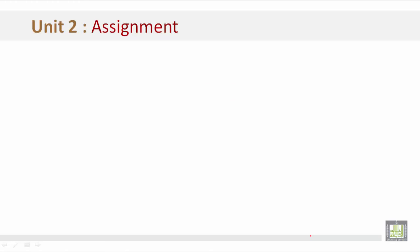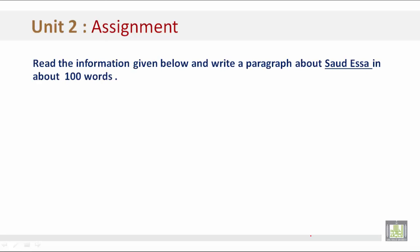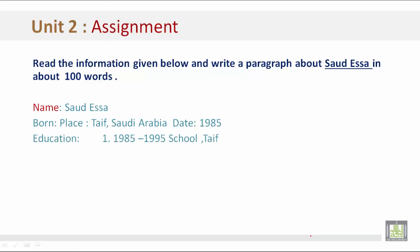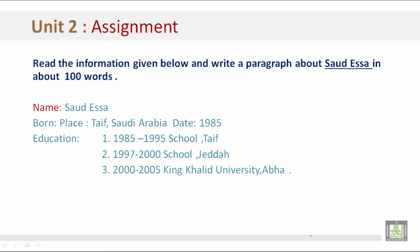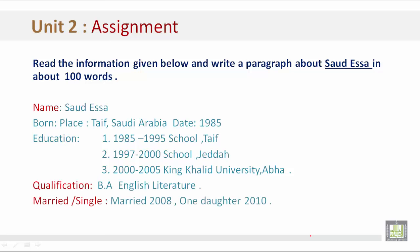Now let's look at the assignment for Unit 2. Read the information given and write a paragraph of about 100 words about Saudisa. His name is Saudisa. He was born in Taif, Saudi Arabia, in 1985. He was educated from 1985 to 1995 in a school in Taif, and from 1997 to 2000 in a school in Jeddah. Between 2000 and 2005 he went to King College University in Abha. His qualification was a BA in English Literature. He was married in 2008, had one daughter in 2010, and since 2010 has been working with the Ministry of Foreign Affairs.